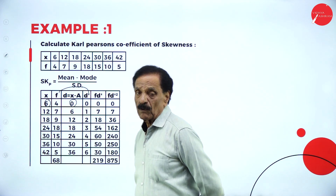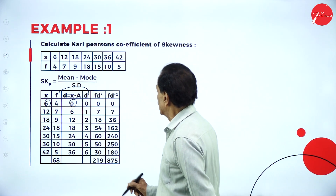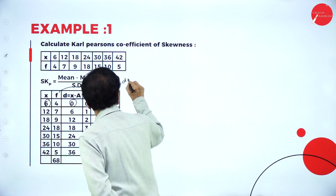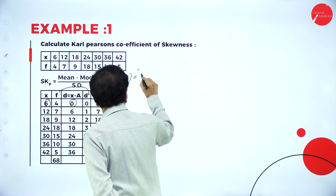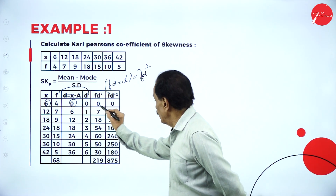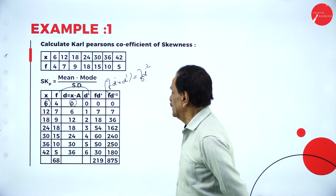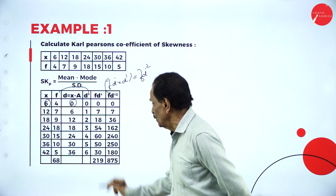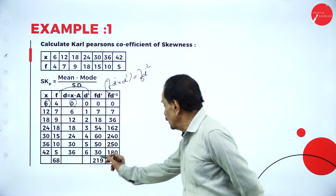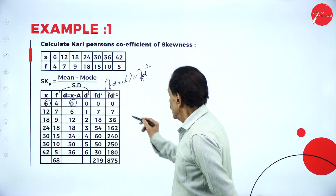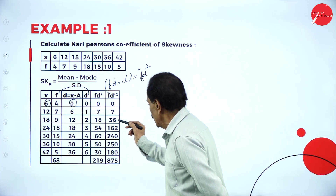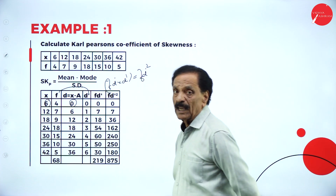FD dash square is FD dash into D dash. 0 into 0 is 0; 7 ones are 7; 18 twos are 36; 54 threes are 162; 60 into 4 is 240; 50 into 5 is 250; 30 into 6 is 180. Add the figures - sigma FD dash square equals 875.